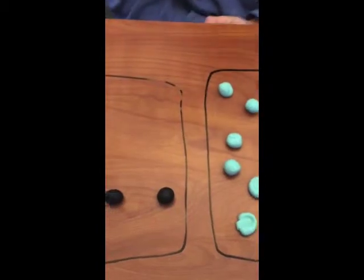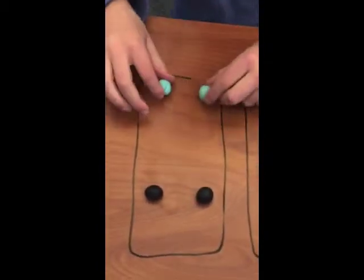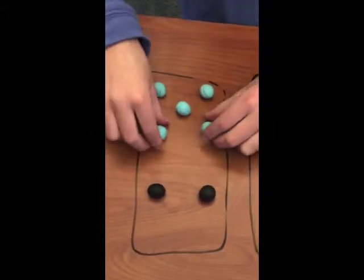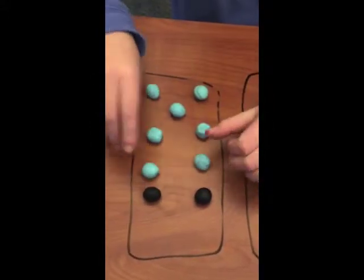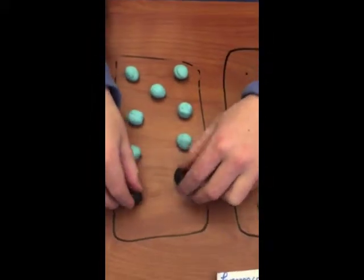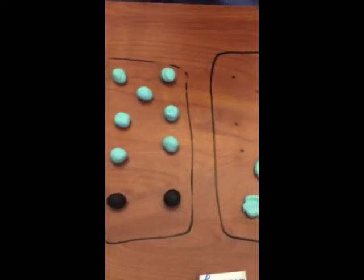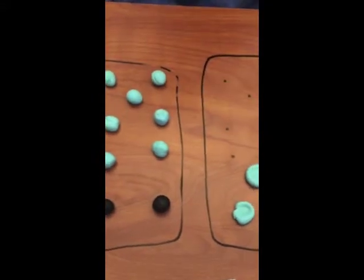Excellent job. Go ahead and move that seven over to the ones place. There's your nine. Okay. Can you give me the whole fact? You started with twelve. You took away. Twelve minus three equals nine. Excellent job.